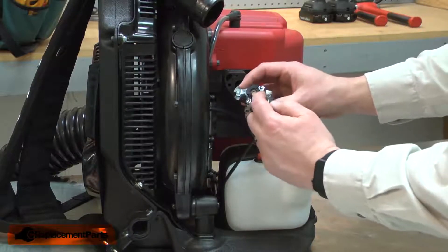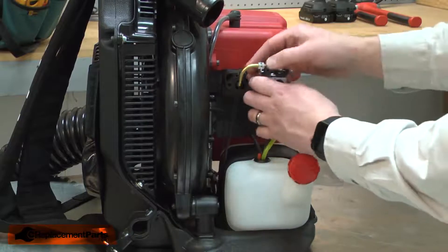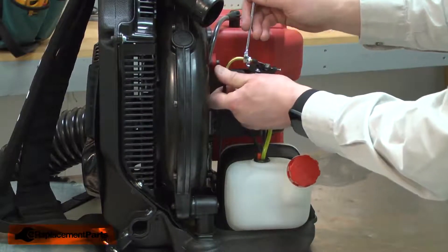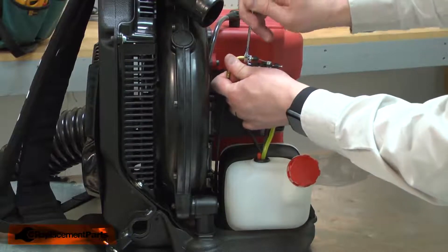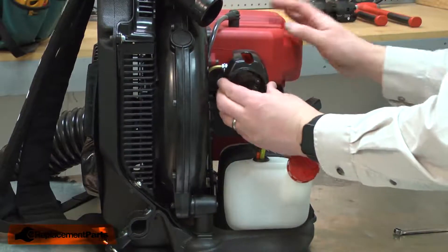Now I'll reinstall the throttle cable. I'll loop the cable through the throttle body, place the elbow in the bracket, and then tighten it with the nut. Now I'll secure the carburetor and the air filter base back to the engine.